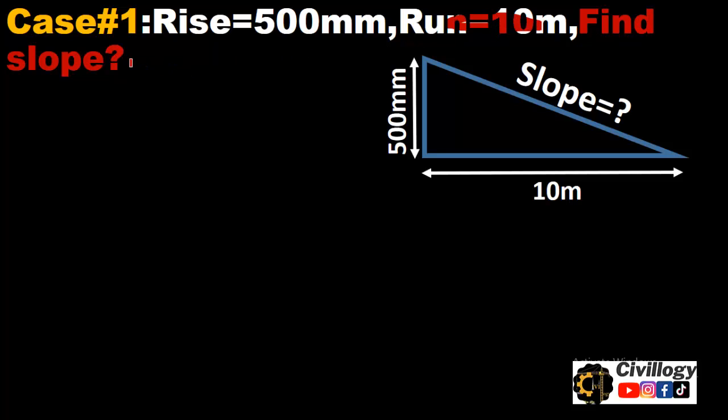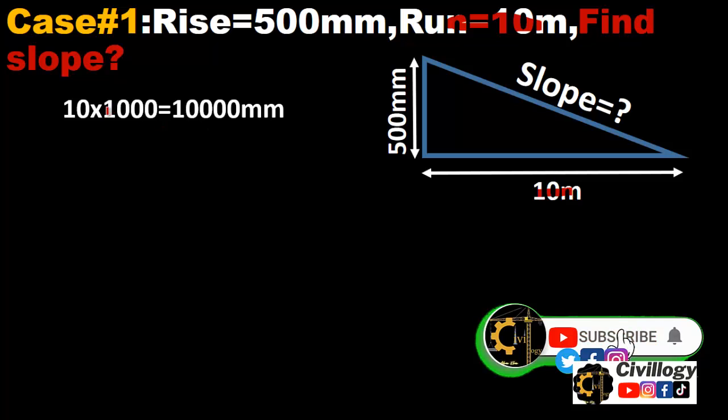First of all, let us convert the unit. As this is in millimeters and this is in meters, let's convert 10 meters into millimeters. What we will do is 10 multiply by 1000 to get a uniform unit.